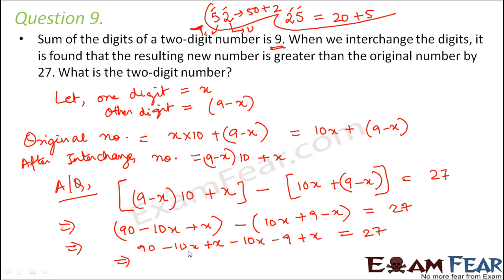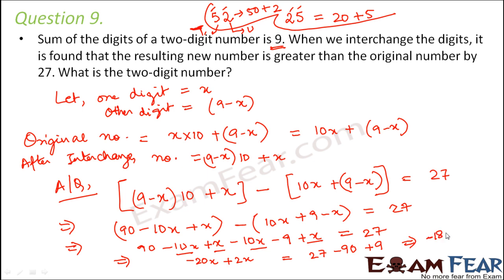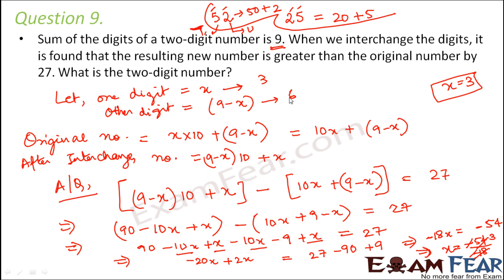Collecting variable terms: −20x + 2x = 27 − 90 + 9, which gives −18x = −54, so x = −54 ÷ −18 = 3. Therefore x = 3, and the other digit is 9 − 3 = 6. The original number is 36. When reversed it becomes 63, and 63 − 36 = 27, which confirms the answer.